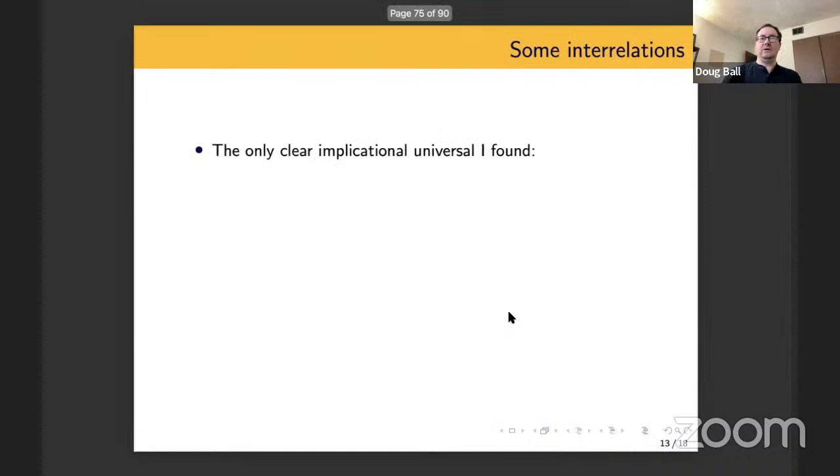If we're doing some typology, we do want to think about implicational universals. And the only one that I've found is if you have a phoneme TS, you have a phoneme T as well. Though this is not particularly exciting because lots and lots of languages have the phoneme T. So maybe not the most profound thing that I discovered here.